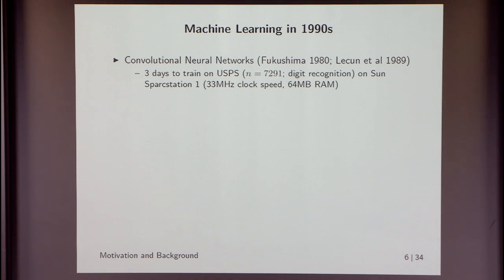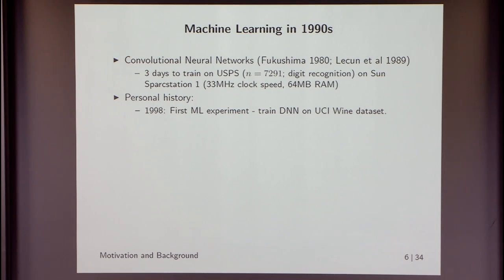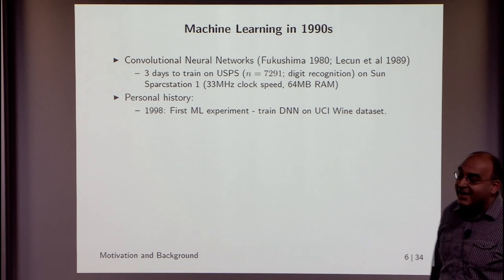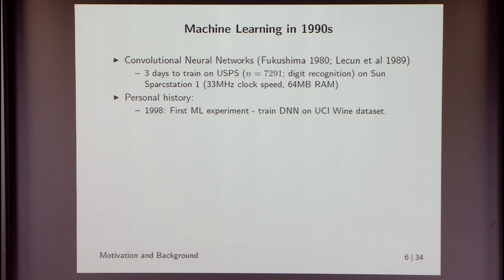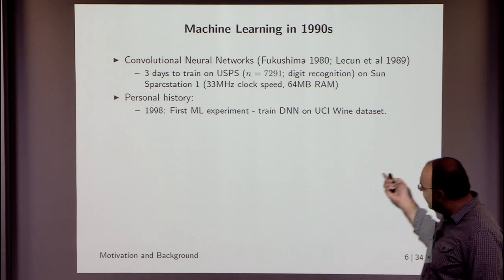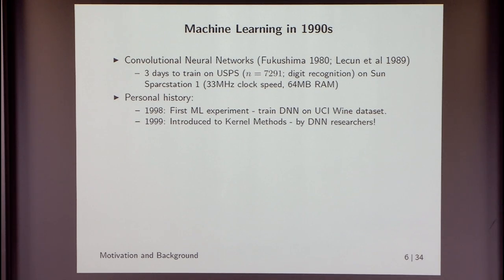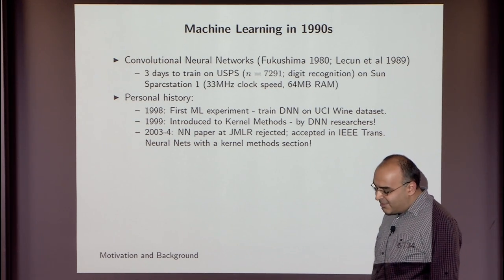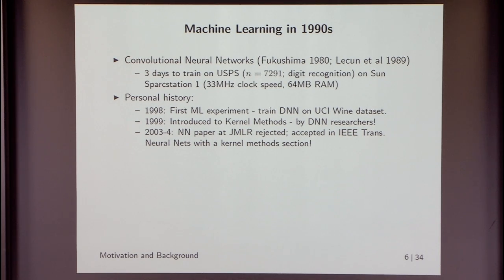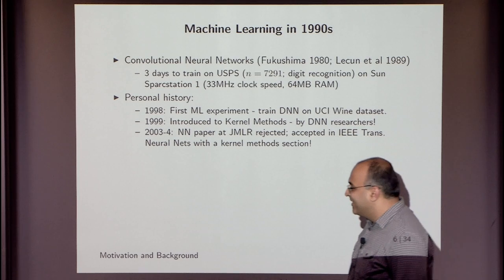We are 100 times faster in clock speed and 1,000 times larger in RAM now. I have some personal history here — as an engineering physics undergraduate at IIT Bombay, I was introduced to machine learning by deep neural network researchers. My first experiment was training a deep neural network on the UCI mines dataset. When I went to pick a thesis topic my DNN friends introduced me to kernel methods as a more promising alternative. My first journal paper was actually a neural net paper, rejected from JMLR for 'too much neural nets' — I added kernels and it got published in IEEE Transactions on Neural Nets.